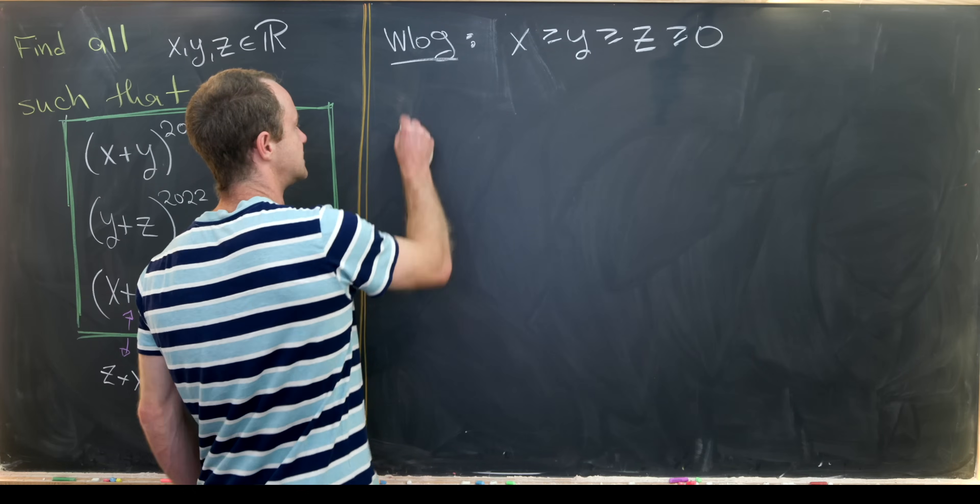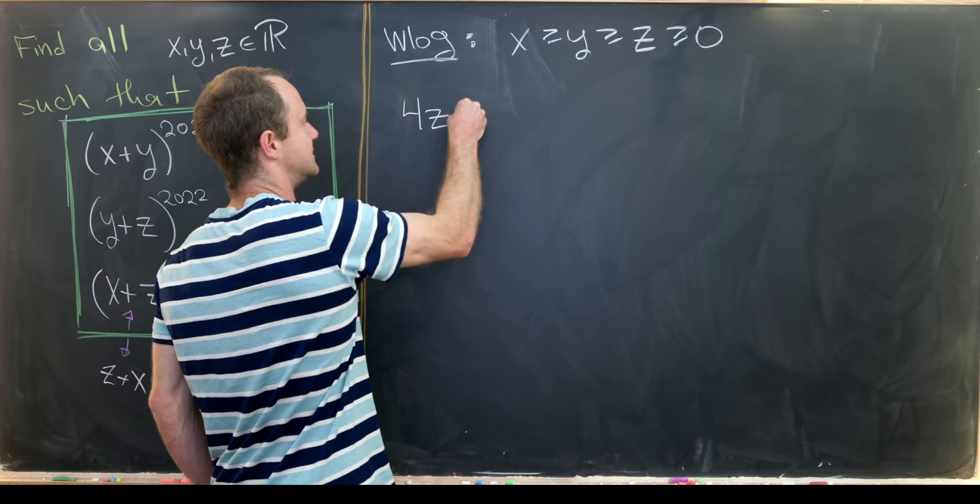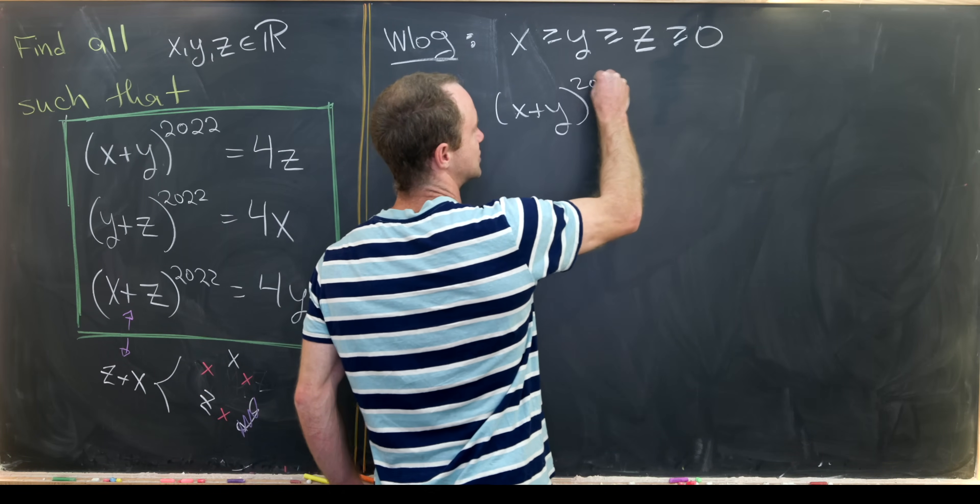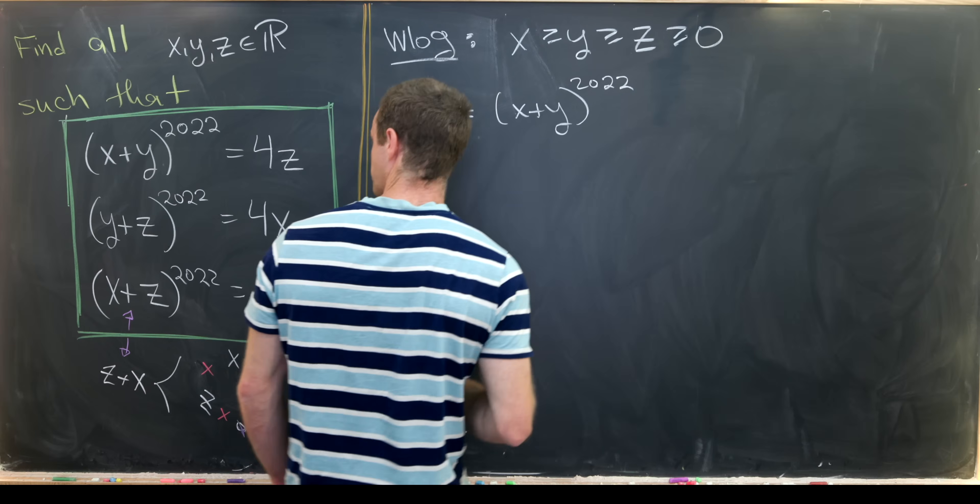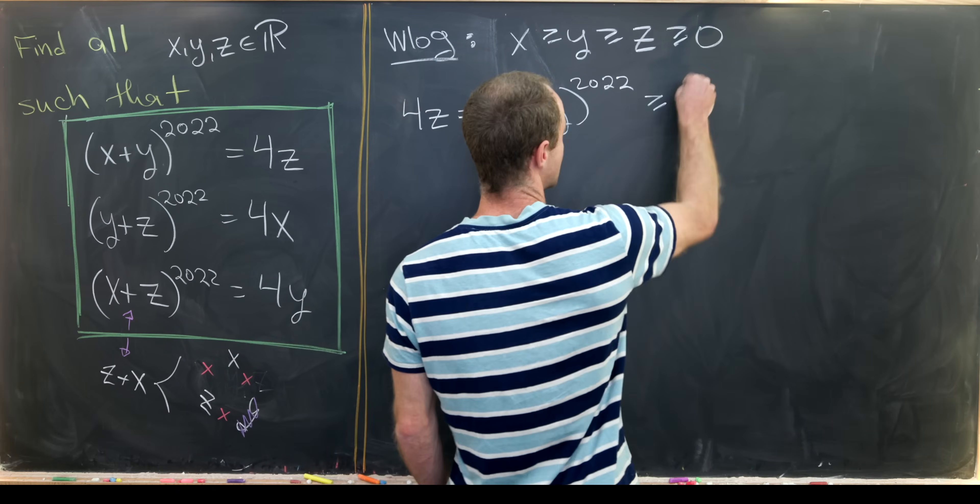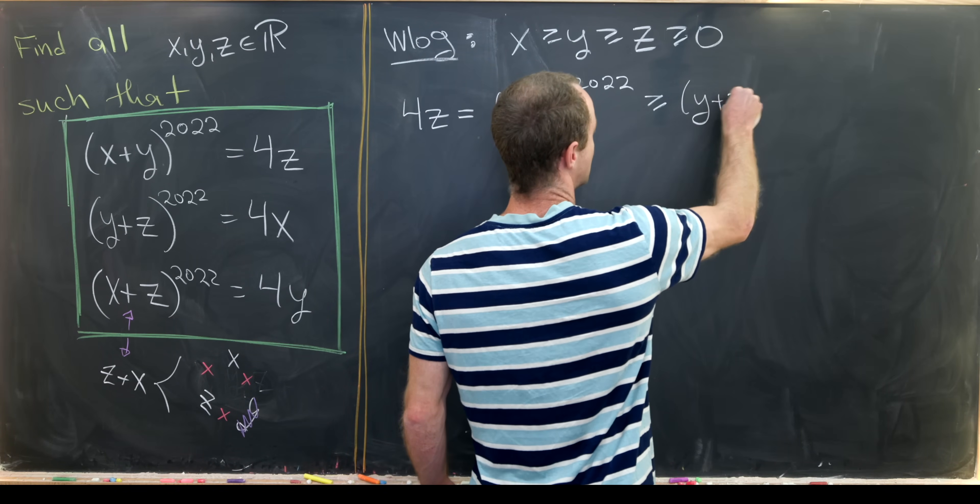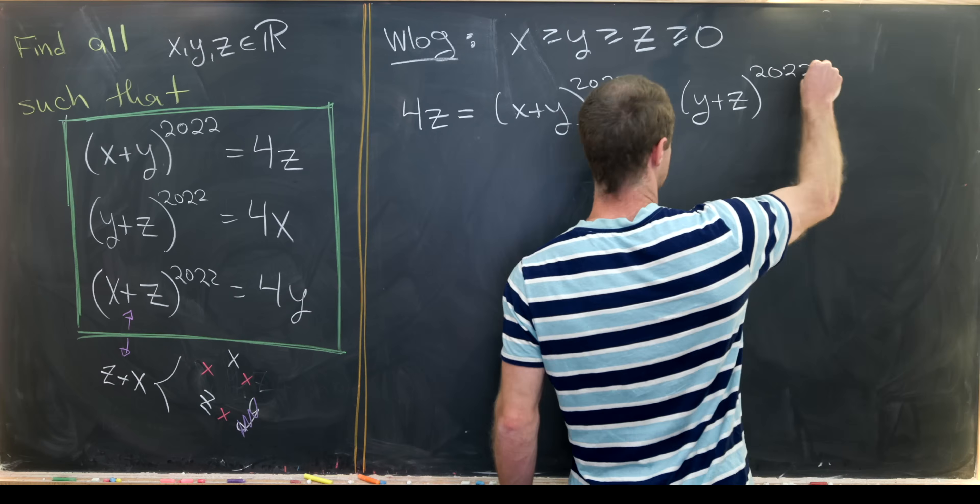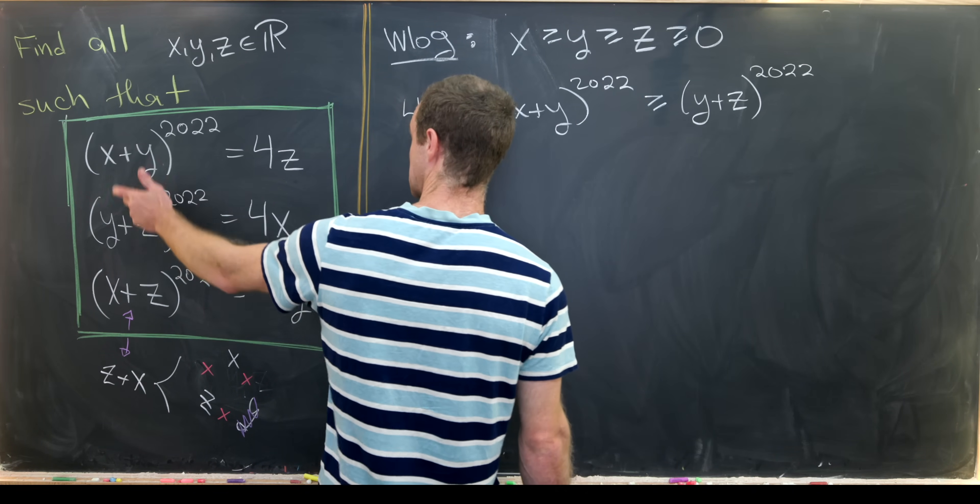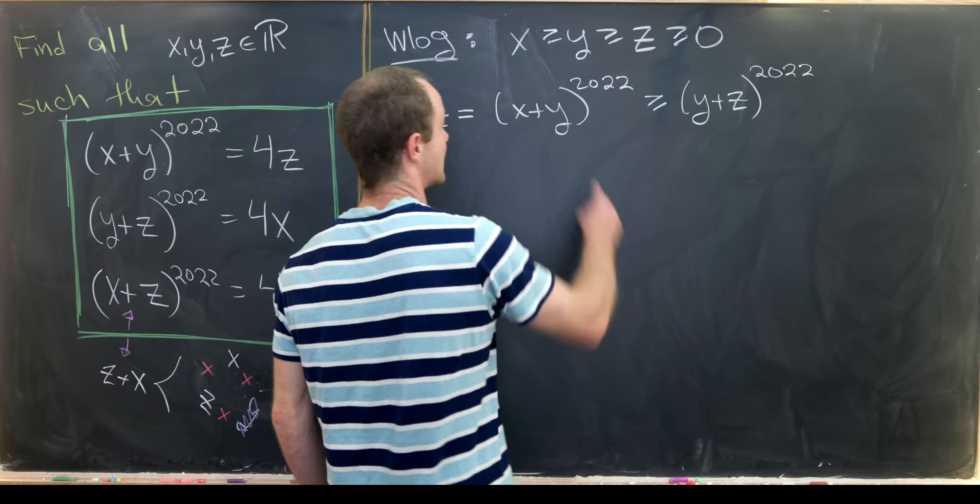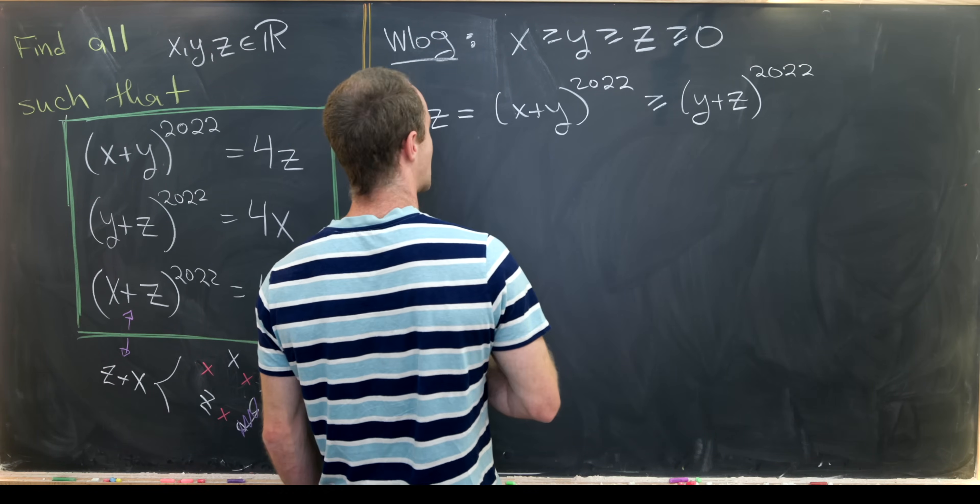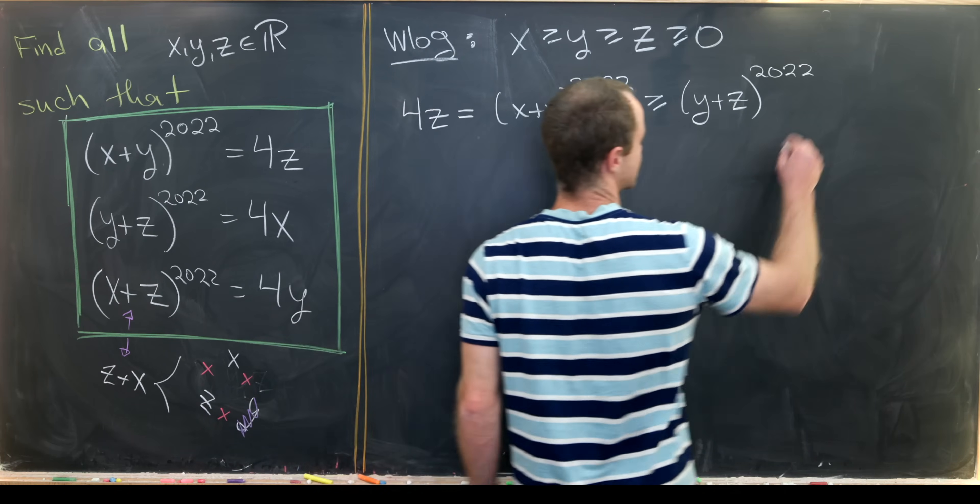Now let's notice that 4z = (x+y)^2022. But (x+y)^2022 ≥ (y+z)^2022. And why is that? Well, we've just replaced x with z from one sum to the other, but x is larger than z. So we clearly get that inequality.